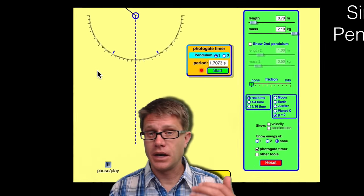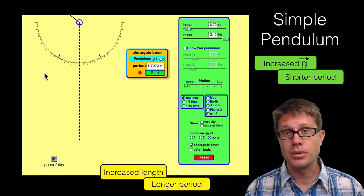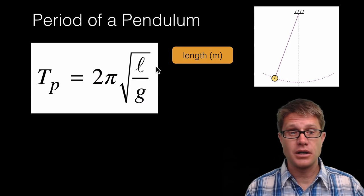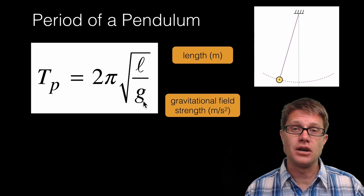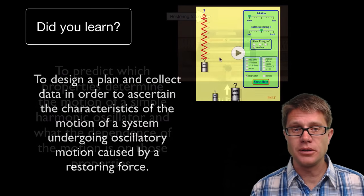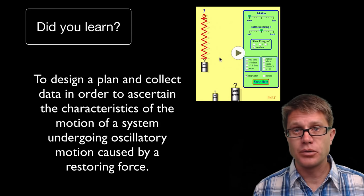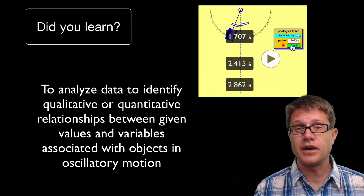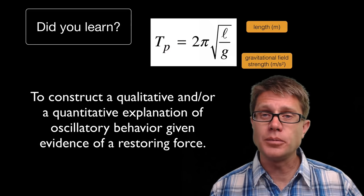Looking at that qualitatively: as we increase the length we have a longer period, and as we increase the gravitational field strength we have a shorter period. Algebraically, length is on top, so as we increase length we increase the period of the pendulum. As we increase gravitational field strength, we decrease the overall period of the pendulum. In summary: could you predict which properties affect harmonic motion? It is a restoring force moving it back towards equilibrium. In a spring it is the mass and stiffness of the spring; for a pendulum it is the length and the gravitational field strength. And finally, could you figure that out quantitatively — what happens as we increase length or gravitational field strength to our period? I hope so, and I hope that was helpful.